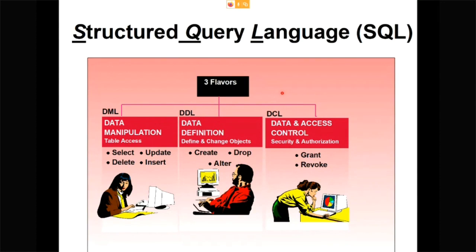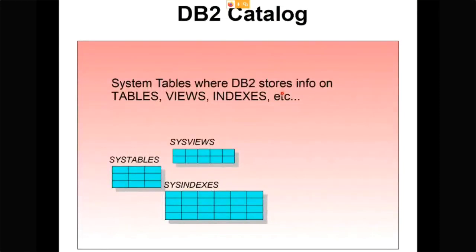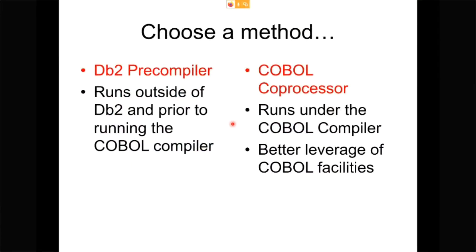One important thing to know about in DB2 is the DB2 catalog. The catalog is where information about all user objects and system objects are kept. DB2 uses the catalog to keep track of everything that's defined. If you use DDL to create a table, a row would be inserted for you in the SYSTABLES table. If you created a view, you would have a row in the SYSVIEWS table. The DB2 catalog is a pretty important thing within DB2.